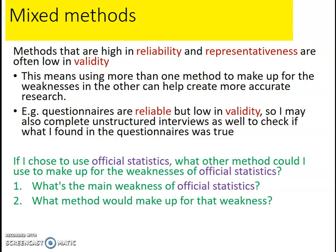Finally, a brief note on mixed methods. Methods that are high in reliability and representativeness are often low in validity, so you need to pick a method that makes up for the weakness of the other method you're using, or even use three methods. For example, if you choose to use official statistics, think about what other method could make up for their weaknesses. Listen to the lecture on secondary data and have a go at that activity.